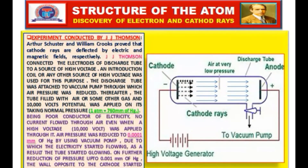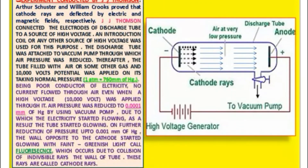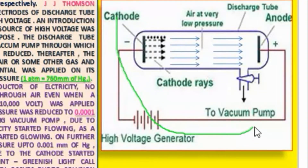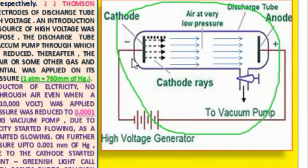The discharge tube was attached to a vacuum pump through which air pressure was reduced. The tube was filled with air or some other gas, and a 10,000-volt potential was applied. At normal atmospheric pressure — 760 millimeters of mercury — air is a poor conductor of electricity, so no current flows even at high voltage.